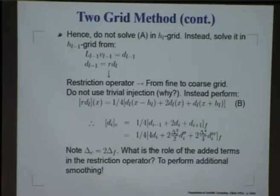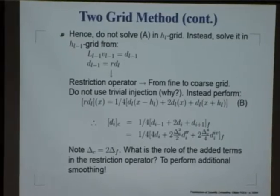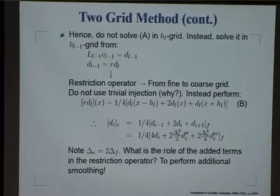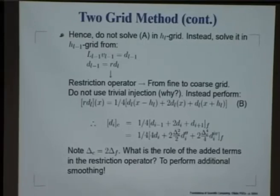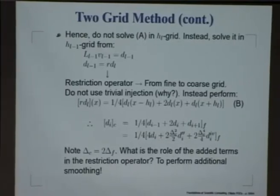In solving this equation, of course, the operator is known to us and this is what we will be calculating in the coarse grid. But the right hand side is to be obtained, and how it is obtained from the fine grid solution. From the fine grid solution we can estimate D of L, and then what we do is we project it to the coarse grid, and that projection is done through what is called as a restriction operator. That essentially means that we are taking the data from the fine to the coarse grid.